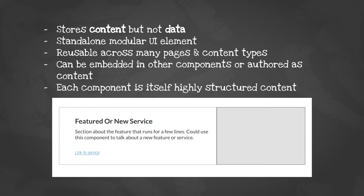Components can be embedded in other components or authored as content. They're reusable, modular, you can place them on a bunch of pages and they're all going to look the same. The components in your site are probably the most highly structured piece of content you have. Twig templates are extremely fragile — if you pass the wrong data to them, it will 500 your page. The level of scrutiny you'd put into a commerce catalog architecture needs to be put into your component architectures as well. The structure of your component matters, and changing it later can be difficult.